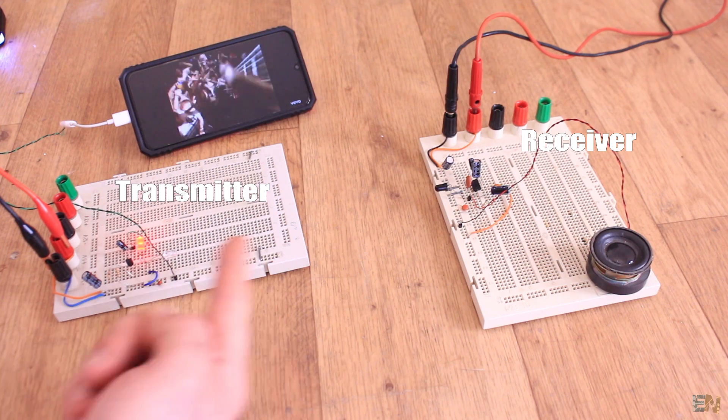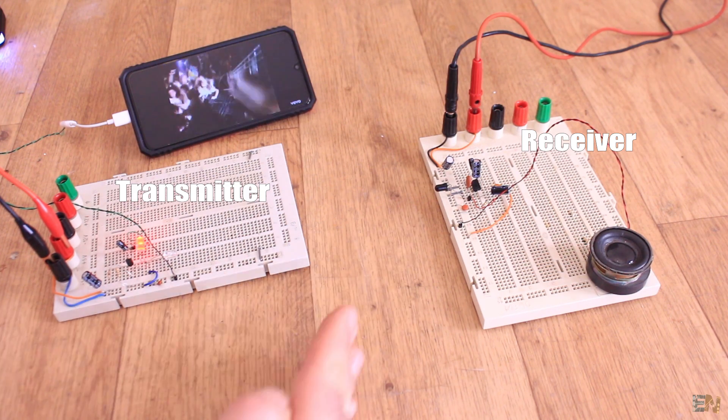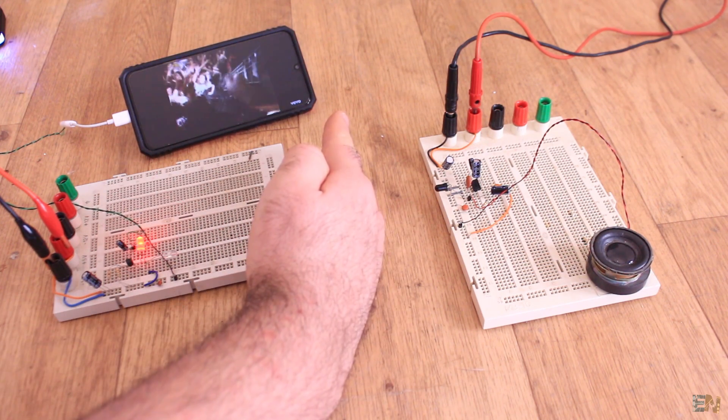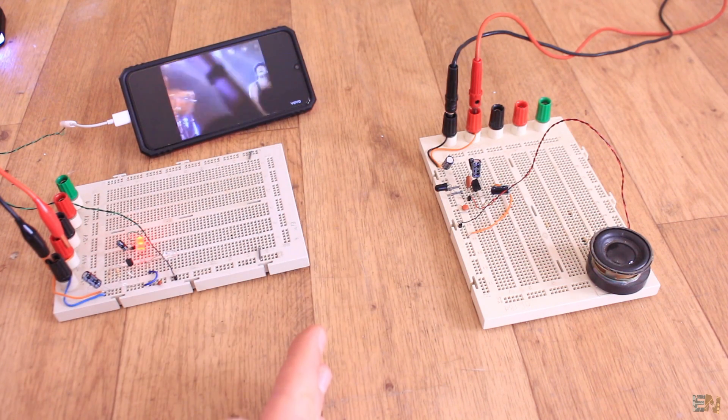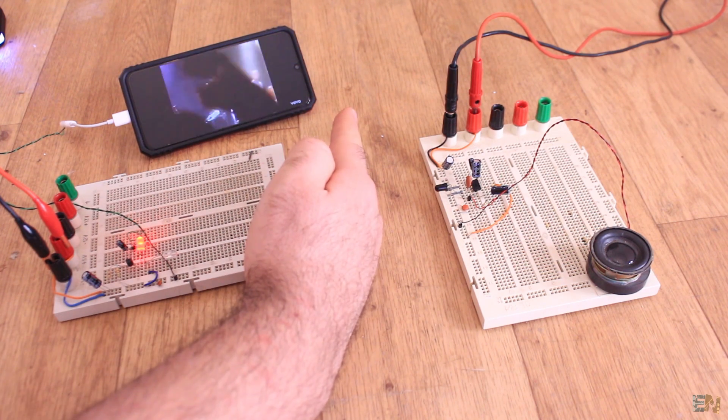So, as you can see, we send music to the receiver but there is no cable connection. And if I put my hand in between, the music stops. So how do we do this?